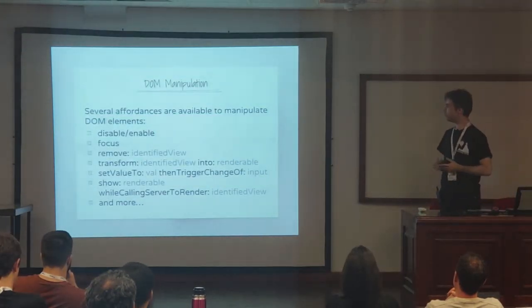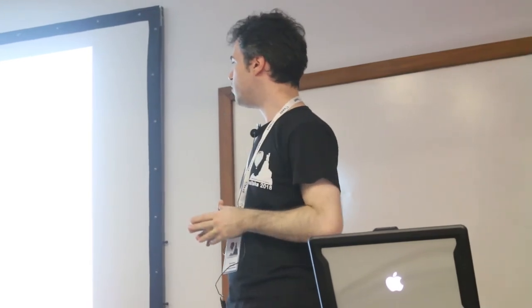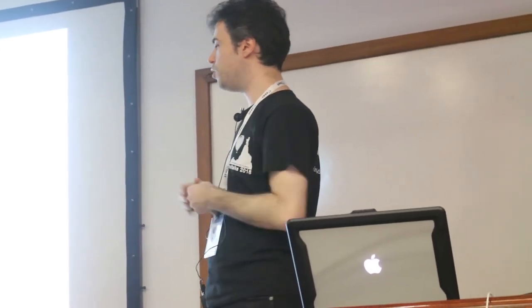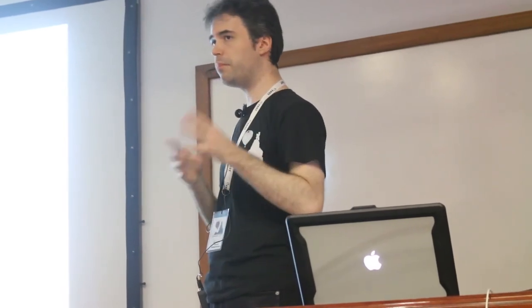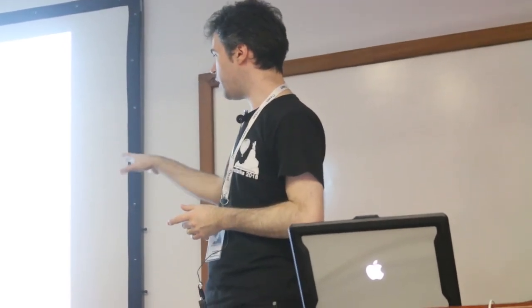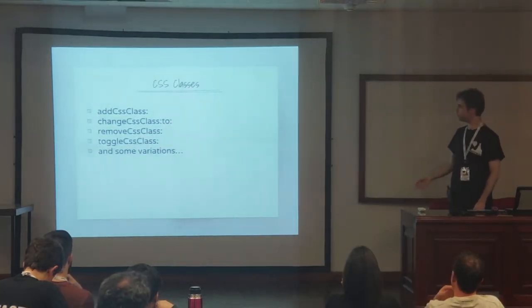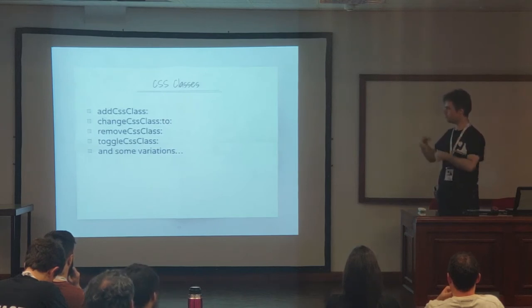We also have affordances to manipulate DOM elements. Like we saw — the disabled before — you can enable it, and there's a protocol for that, with tests for everything. You can focus on the component, remove the specified view from the DOM without affecting the rest of the structure, transform one view into another — for example when you want to show the user that processing is happening and then show results — or just set a specific value, show or open windows, and stuff like that. We also have support for handling CSS classes. If you want, on trigger of a button or a field, you can use that value to change the CSS class, or remove it, or toggle it, for that component or another component.